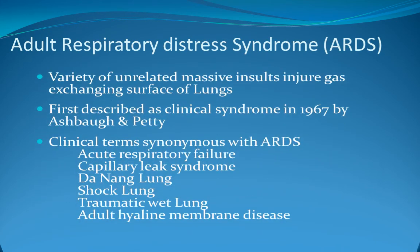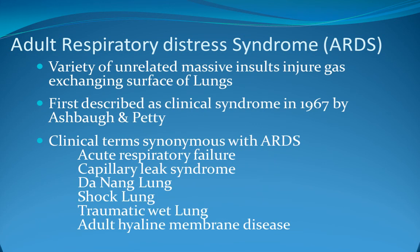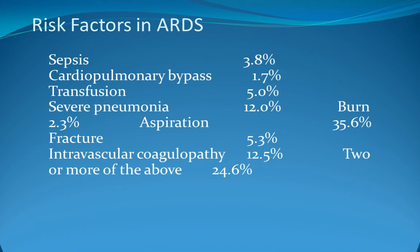A variety of massive insults can injure the gas exchange surface of the lung; the clinical term is often synonymous with acute respiratory distress syndrome, also called capillary leak syndrome, shock lung, or adult hyaline membrane disease. Risk factors include sepsis, cardiopulmonary bypass, transfusion, severe pneumonia, aspiration, fractures especially of long bones, and intravascular coagulopathy.